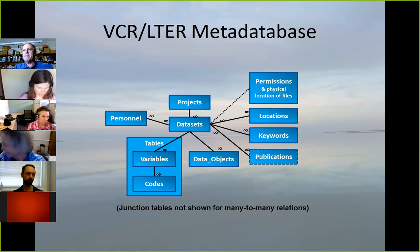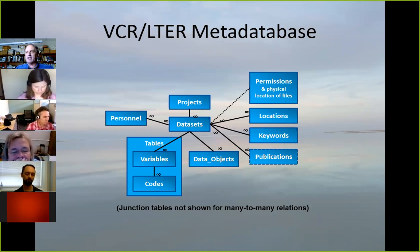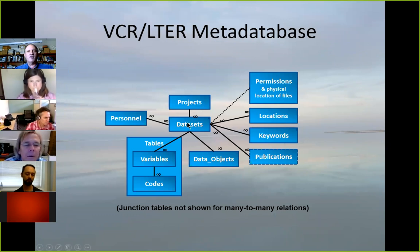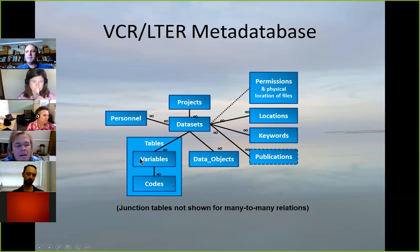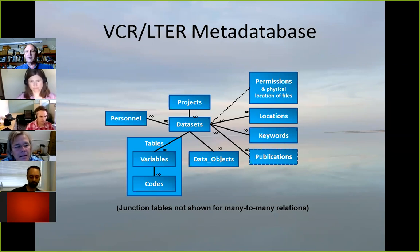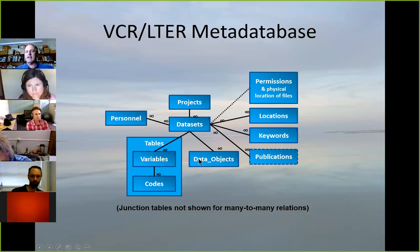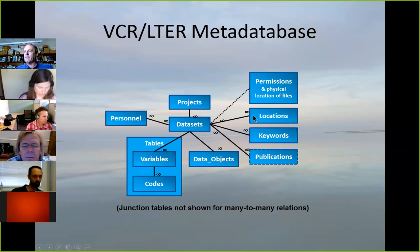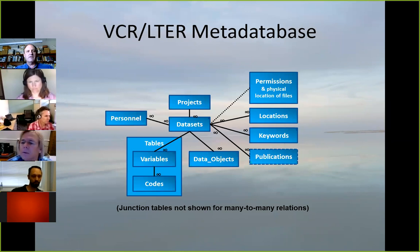Our metadatabase consists of a number of tables. Basically we have projects, each project may have multiple datasets, each dataset may have multiple tables or data objects, and each table has a list of variables. Some of those factor-type or coded variables may then have codes associated with them. Data objects tend to be for things like GIS data — non-tabular types of data. All of those are linked to tables that describe locations, with named locations each associated with coordinates.